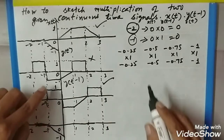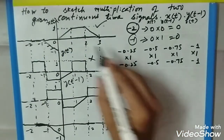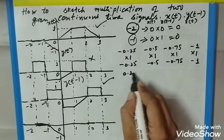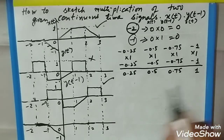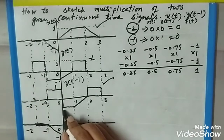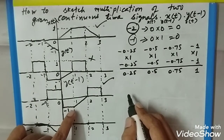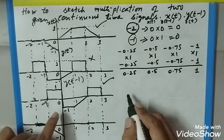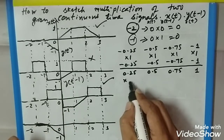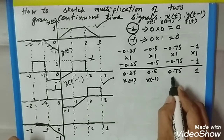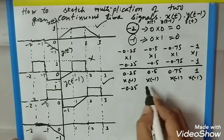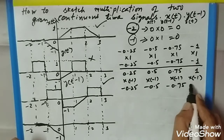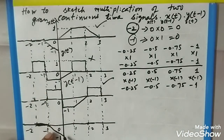Coming to the next segment, from 0 to 1, x(t) is also divided into parts: plus 0.25, 0.5, 0.75, and 1. From 0 to 1, x(t) is gradually increasing and y(t-1) is constant at minus 1. So multiplying: into minus 1, into minus 1, into minus 1 — which results the same way, giving minus 0.25, minus 0.5, minus 0.75, and minus 1 from 0 to 1.